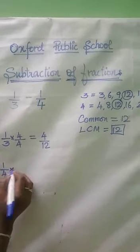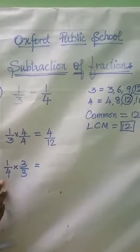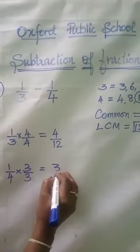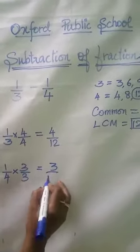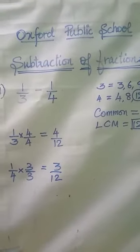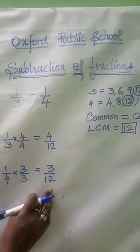Good. So 3 by 3 I am going to multiply with 1 by 4. When I multiply, 1 times 3 is 3, 4 times 3 is 12. So what is my new fraction I got now? 3 by 12.